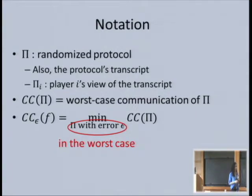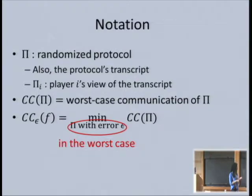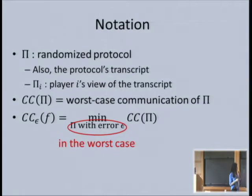If you do this cleverly with a good distribution, you get a lower bound of Ω(NK). But the problems addressable with this technique are things like bitwise AND—computing the AND of all N coordinates—and their technique doesn't seem to go far enough to address set disjointness.